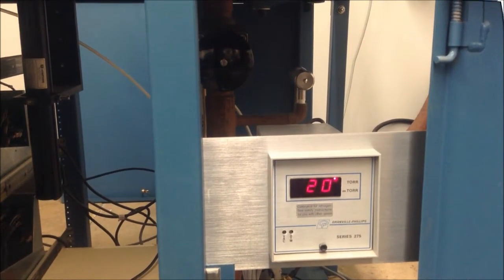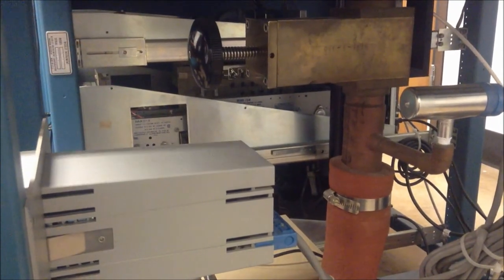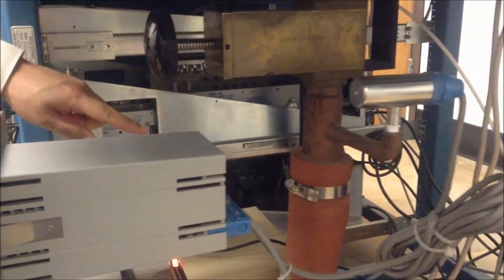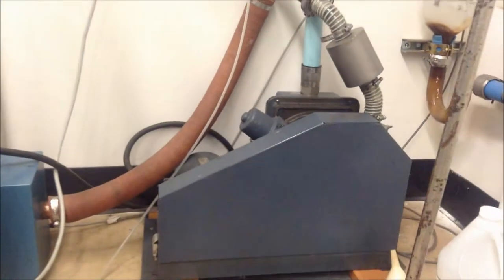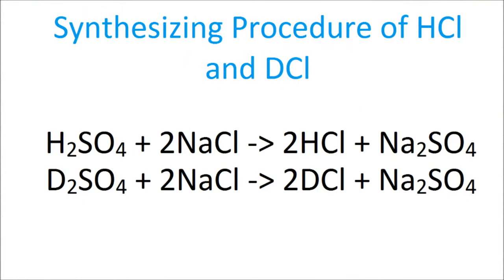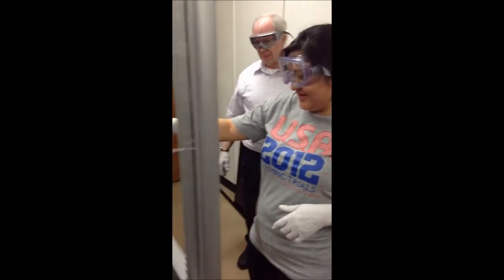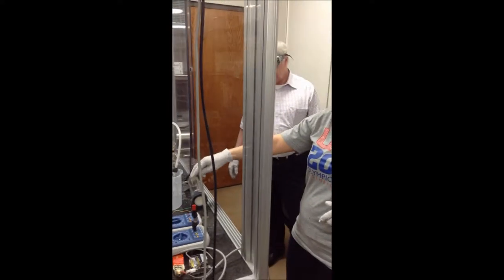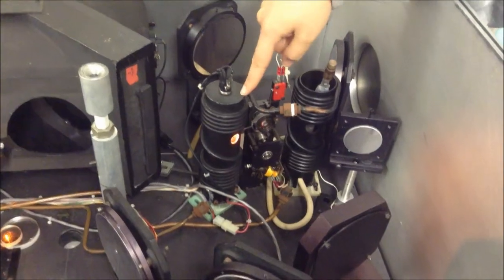This is the Granville Phillips Series 275 pressure gauge. This black dial is the open and close valve from the vacuum to the axle. Down here are the copper pipes, which are connected all the way to the vacuum. I am dropping two drops of sulfuric acid into the NaCl, which is in the round bottom flask.